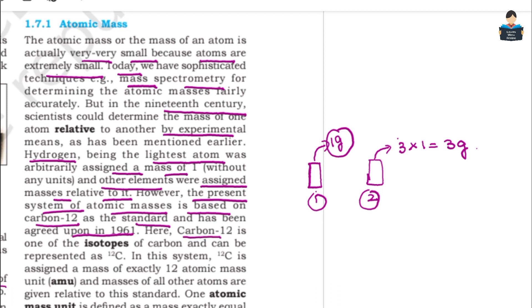Carbon-12 is one of the isotopes of carbon. Carbon has isotopes: C-12, C-13, and C-14 — that is carbon-12, carbon-13, and carbon-14. Carbon-12 is assigned a mass of exactly 12 atomic mass units.